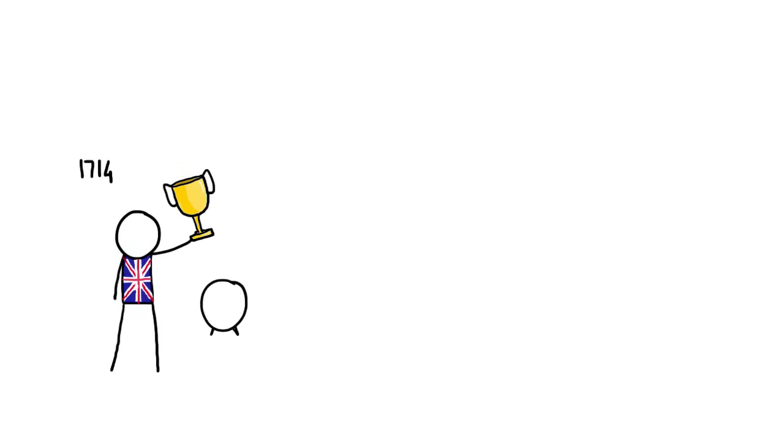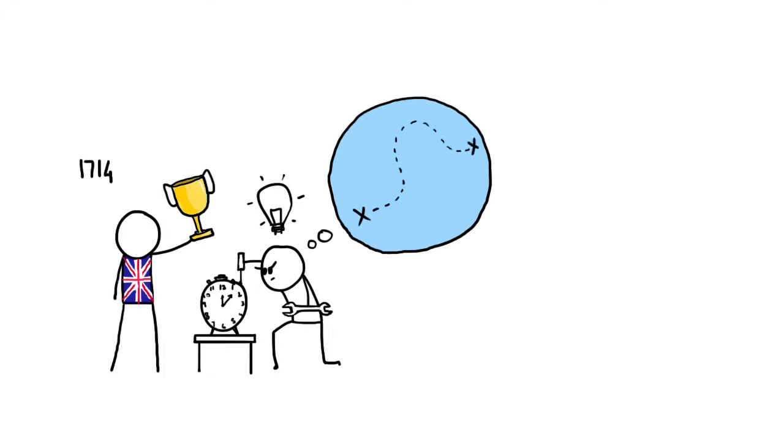In 1714, the British government offered a prize to anyone who could perfect and demonstrate a clock that would be accurate enough over long voyages to give the desired precision in locating a ship. This type of clock was called a chronometer.